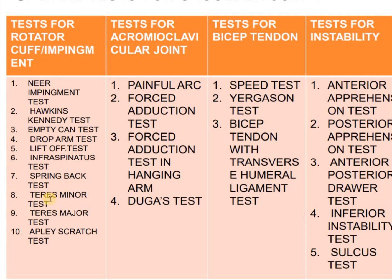Next are the special tests for various shoulder problems. Tests for rotator cuff impingements are: the Neer impingement test, Hawkins-Kennedy test, empty can and full can test, drop arm test, lift-off test (subscapular lift-off test), infraspinatus test, spring-back test, teres minor test, teres major test, and Apley's scratch test.